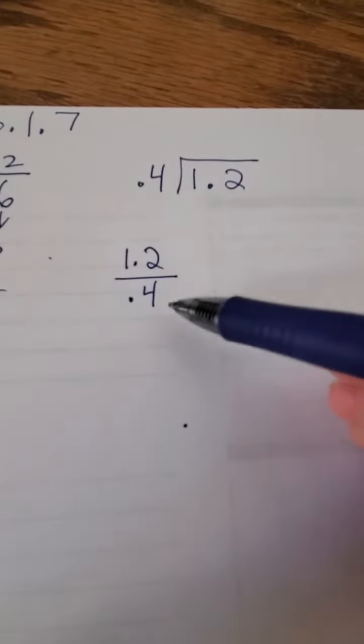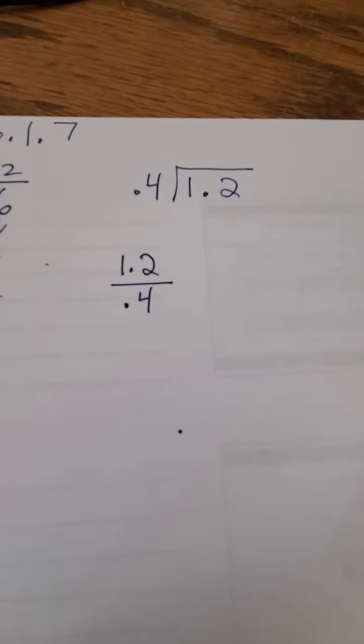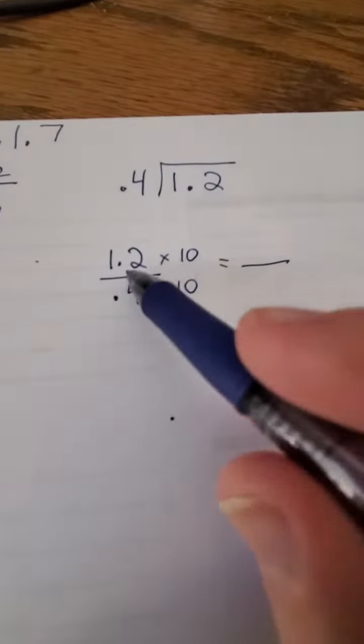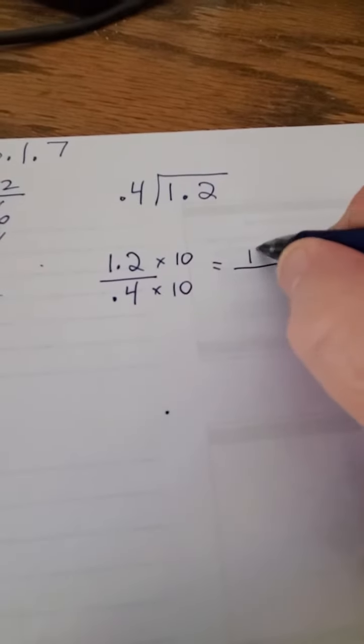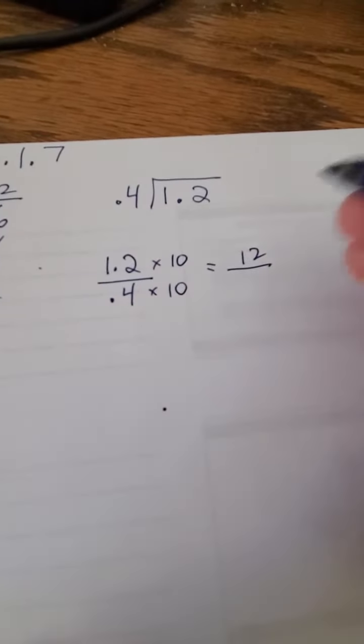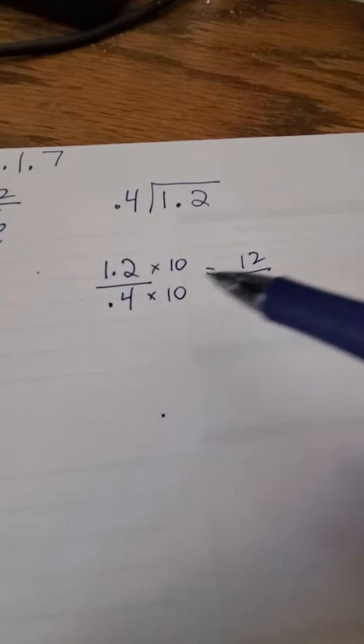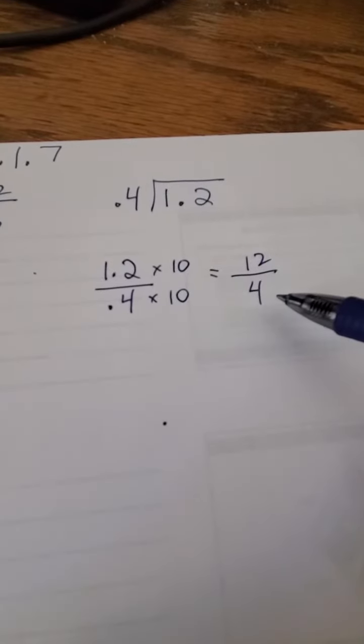That's the same thing as a fraction, 1.2 divided by 0.4. I'm going to multiply top and bottom by 10, and you'll see why in a second. When we multiply top and bottom by 10, 10 times 1.2, that's 12. And 10 times 0.4 is 4, which means 1.2 divided by 0.4 is the same thing as saying 12 divided by 4.